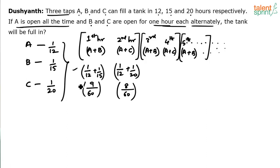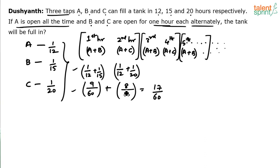When solving, you directly compute: 1/12 + 1/15 = 9/60 and 1/12 + 1/20 = 8/60. Then 9/60 + 8/60 = 17/60. So every two hours, 17/60 of the total work is completed.